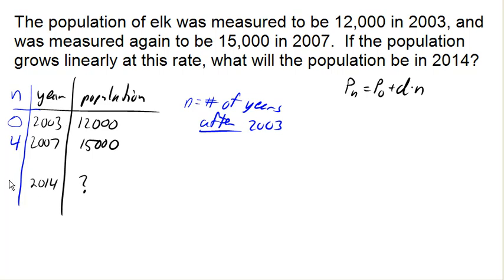So that would be 11 years after 2003. And so by defining n in this way, then this tells me that the population when n is 0, or in other words, in the year 2003, is 12,000. And this is telling me that the population 4 years later, when n is 4, is 15,000.